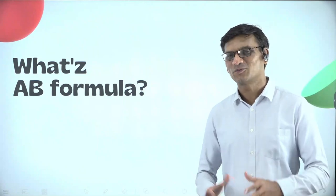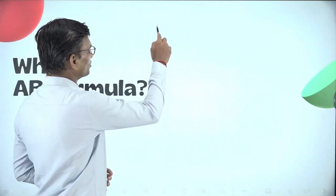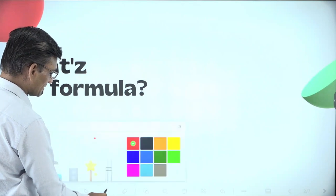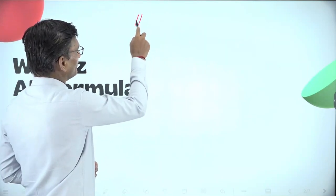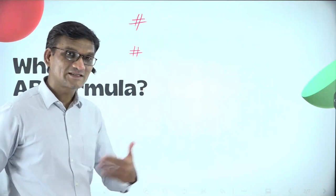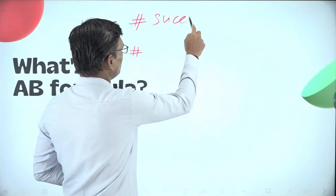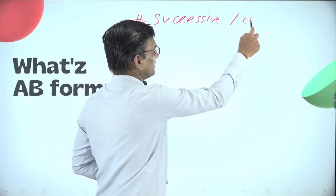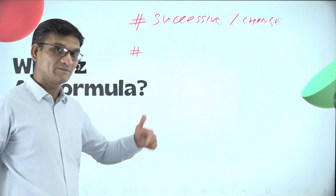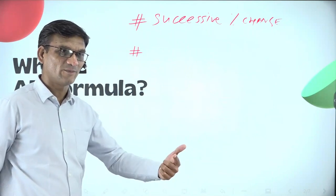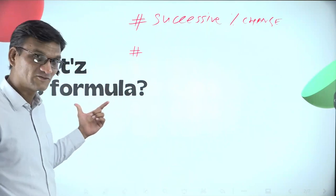Today we are taking Clever Maths on the topic percentage, and there is also a special formula, A-B formula. Some students will know, if not, we are going to talk about it today. So, what is the formula? You can apply this formula when population is changing, price is changing.